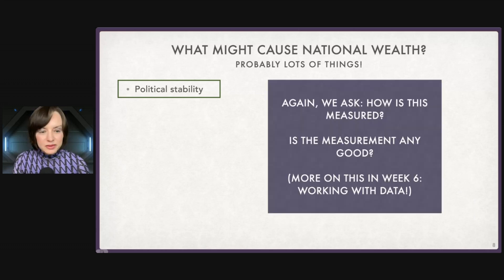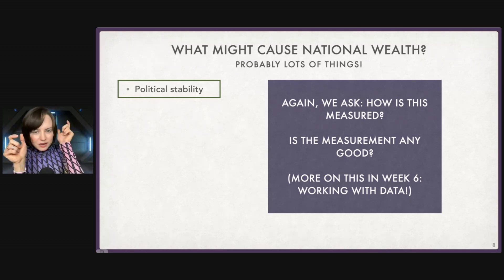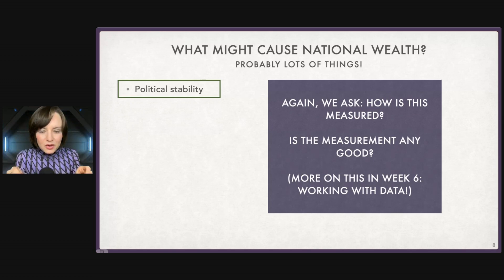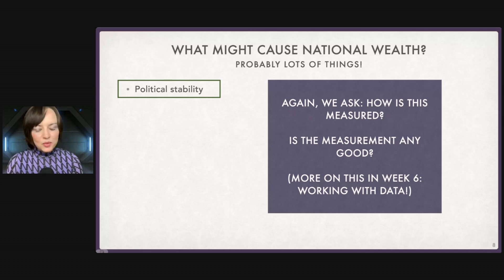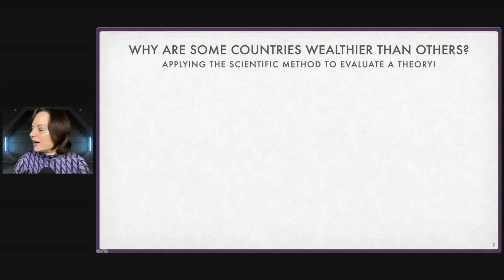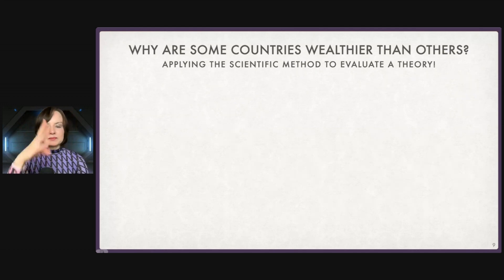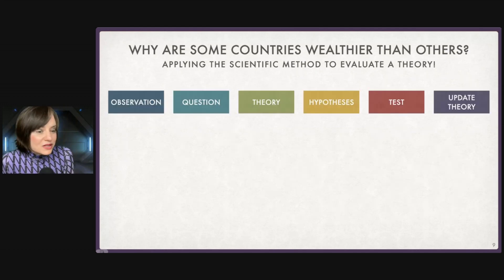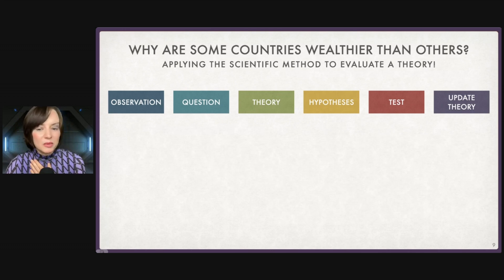Suppose I focus just on political stability. How do we measure it? Suppose I wanted a dataset with one column for GDP and one for political stability to see if they go together. We might say: no violent coups in a certain amount of time — but even then, what's a coup? What's violent? It's very tricky. Suppose we have that perfect data. We are going to use the scientific method to figure out whether our thinking around what causes a country to be wealthier than others is right.